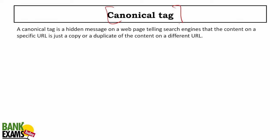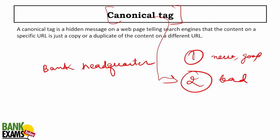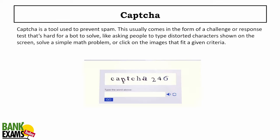Canonical tag: if two pages on bankexamstudy.com have the same content, for example a list of bank headquarters on both page one and page two, I put a canonical tag on page two telling the search engine it is a copy of page one and to give link juice to page one. It is a hidden message telling the search engine that the content on a specific URL is a duplicate. Captcha is used to avoid bots and spam — you've seen the text you need to fill in to move forward.